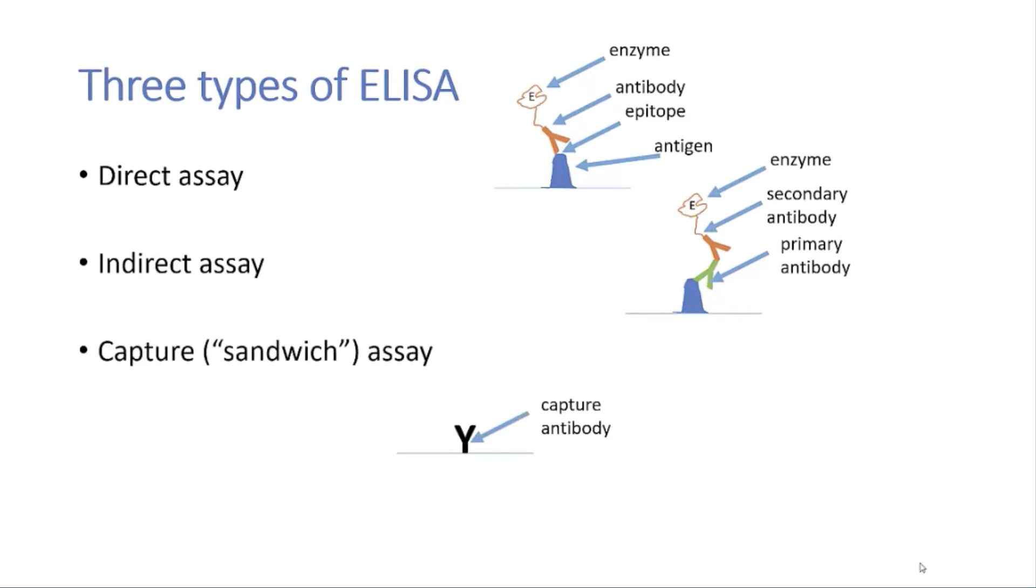In a third type, the capture or sandwich assay, three antibodies are involved. A capture antibody is bound to a surface. Once the antigen is added to it, that will bind to the capture antibody. And then after that, it's just like the indirect assay. A primary antibody will recognize the antigen and the secondary antibody will bind to the primary antibody.